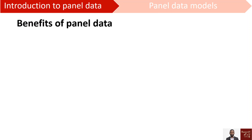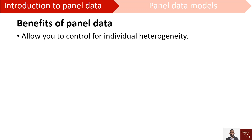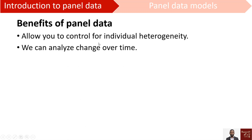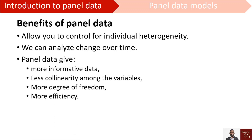Now we look at the benefits of using panel data over cross-sectional data. If we use panel data, we are able to control for individual heterogeneity — simply meaning the differences across individuals such as Bob, Sarah, Nicole, and Peter. We are also able to analyze change over time; for example, if a policy is introduced, we can know its impact after the year it was introduced. Panel data gives us more information because we have data from years before and the current year.